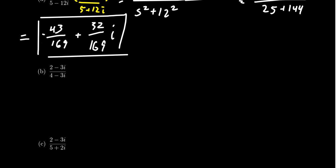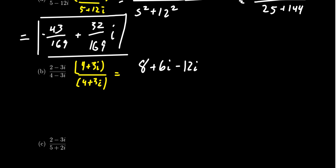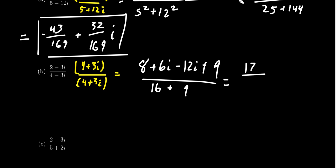Let's do another example: 2 minus 3i divided by 4 minus 3i. We multiply the top and bottom by the conjugate of the denominator, which is 4 plus 3i. FOILing the numerator: 2 times 4 is 8, 2 times 3i is 6i, negative 3i times 4 is negative 12i, and negative 3i times 3i — since 3 times 3 is 9 and i squared is negative 1 with an existing negative — becomes plus 9. The denominator gives 4 squared plus 3 squared, which is 16 plus 9 equals 25. Combining like terms: 8 plus 9 is 17, and 6 minus 12 gives negative 6i. So the answer is 17 over 25 minus 6 over 25 i.